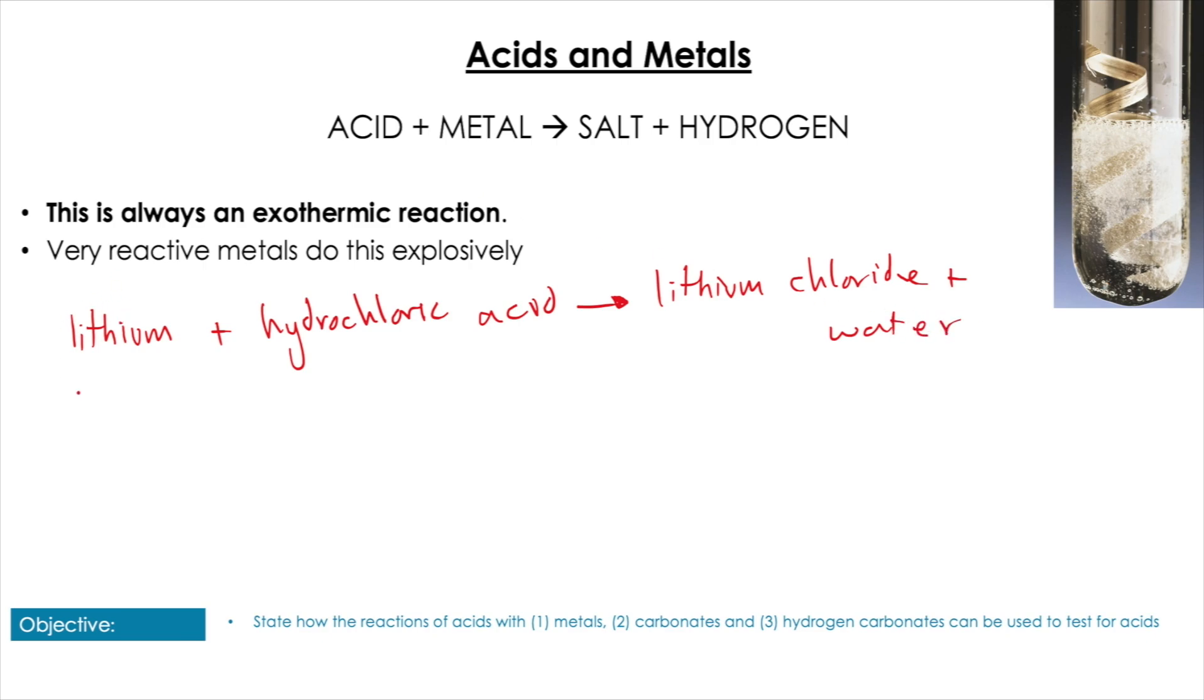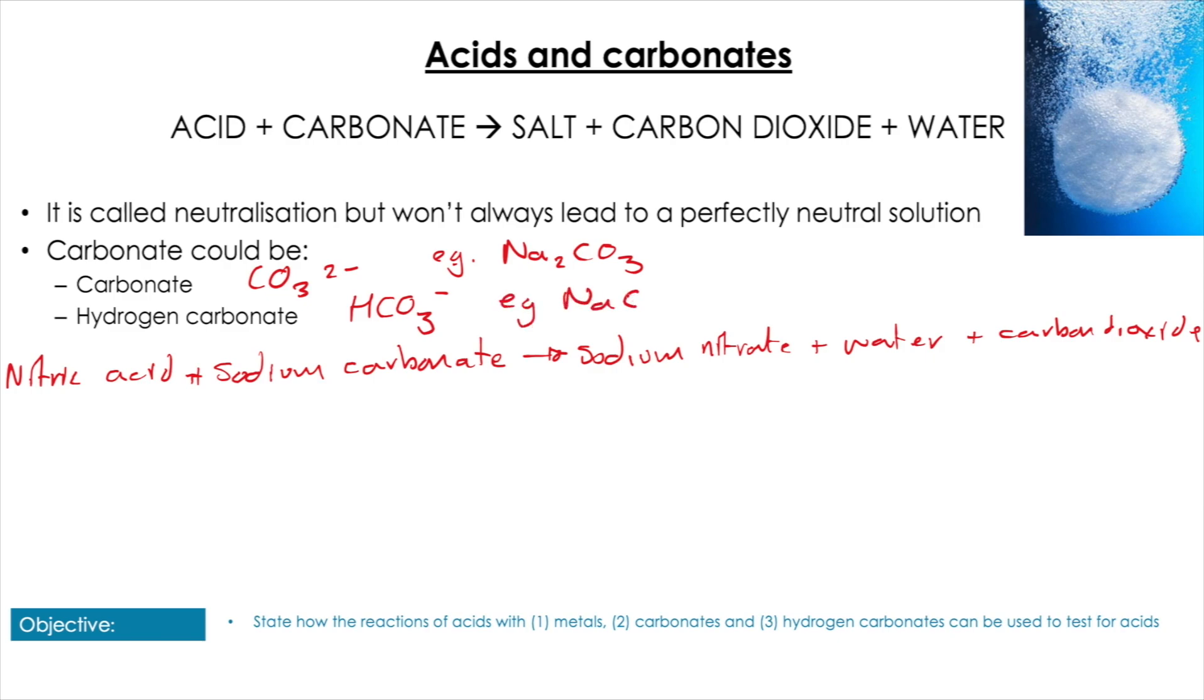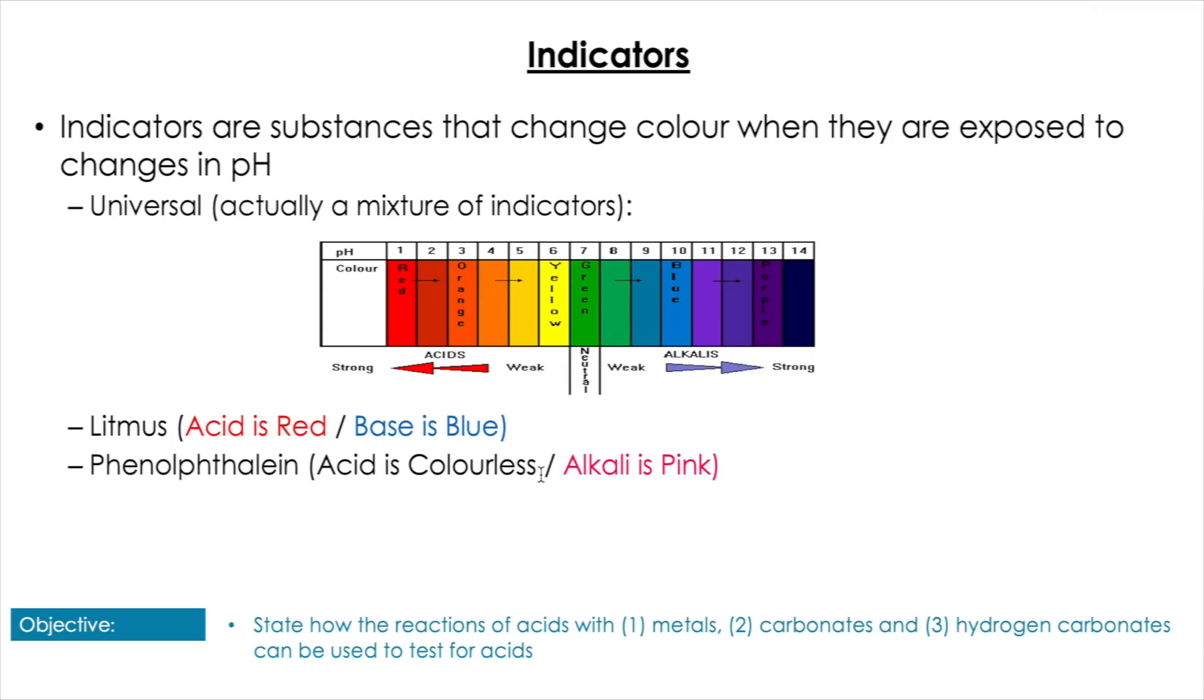Okay, the last one we're going to look at then is acids and carbonates, here producing salt, carbon dioxide, and water. Again, not producing a neutral solution, and we can include both the carbonates and the hydrogen carbonates. We're going to look at naming salts just after this if you're not comfortable with that. So carbonates are CO3 2- so we can have the example here of sodium carbonate, which is going to be Na2CO3. And a hydrogen carbonate is HCO3-, so that sodium hydrogen carbonate would be NaHCO3.